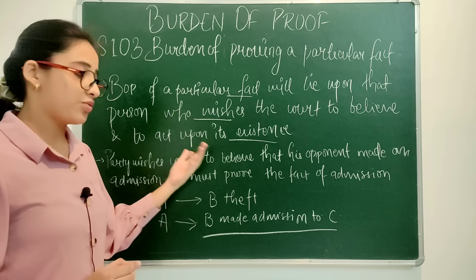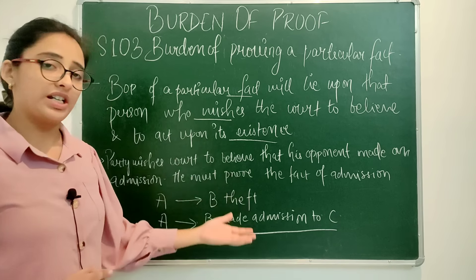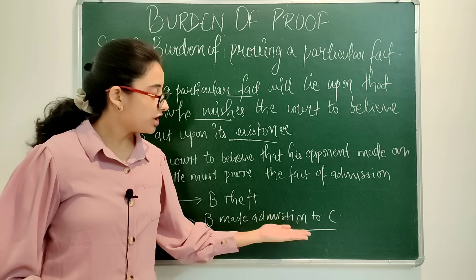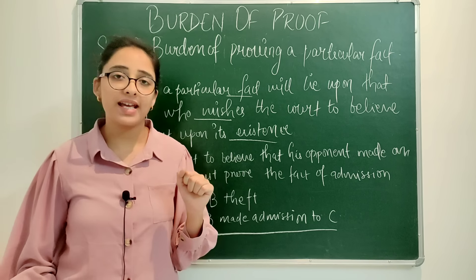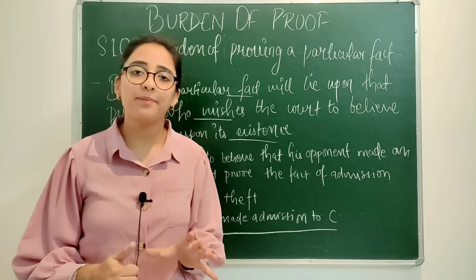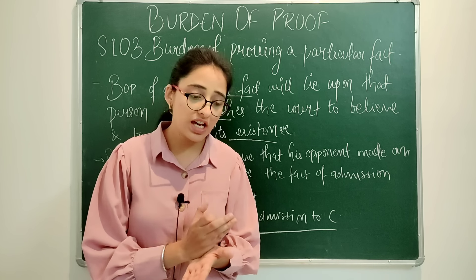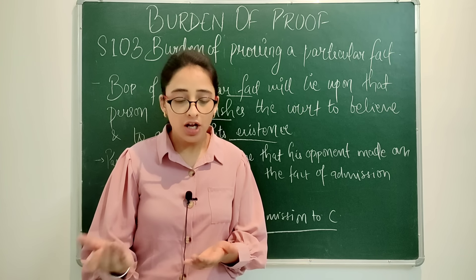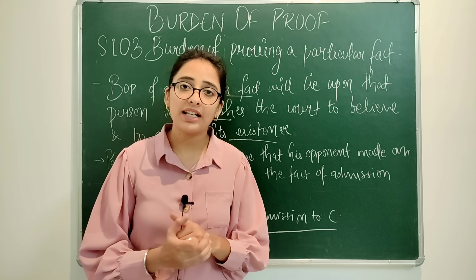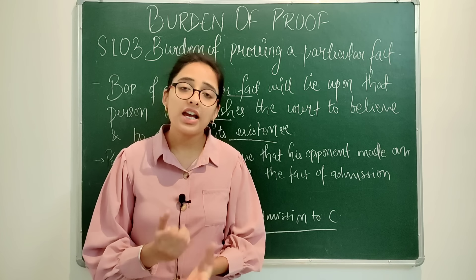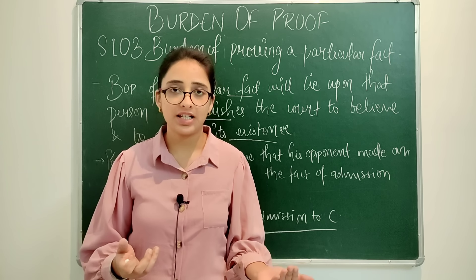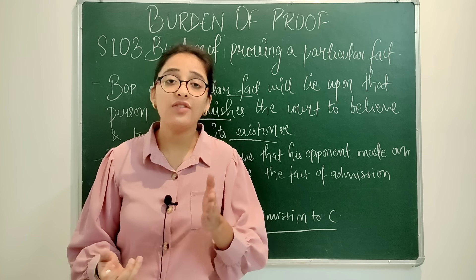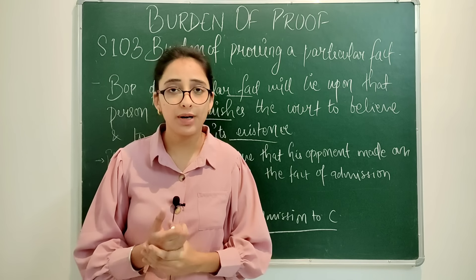A must prove the fact of admission — B's admission — to get judgment in his favor. This is the principle: when a party wishes the court to believe that his opponent has made any admission, he must prove the fact of that admission. Another example in a criminal case — A was alleged to have been present at the scene of the murder. A wants the court to believe that he was present somewhere else — he wants to take a plea of alibi under section 11. He wants to prove that where the murder occurred, he was not there — he was far away, in Kolkata.